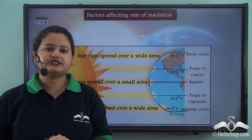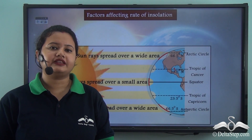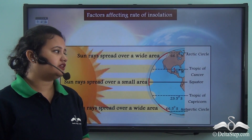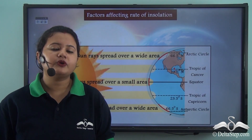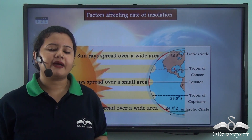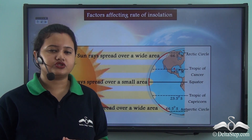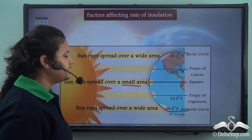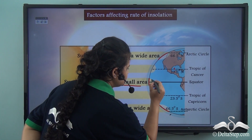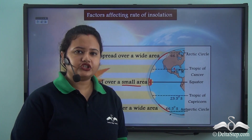Thar Desert is located near the Tropic of Cancer, so we can also say that Thar Desert is located in the torrid zone. This torrid zone or the equatorial region receives maximum sun's heat because the sun's rays coming to this zone are concentrated over a small area. Sun rays are spread only this much in the equatorial region.